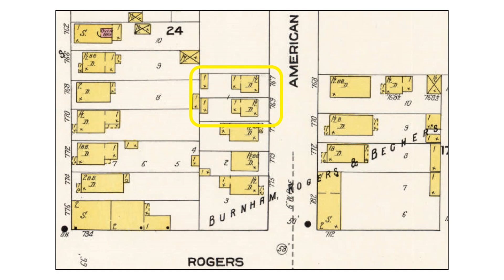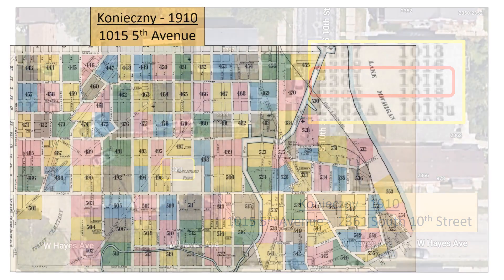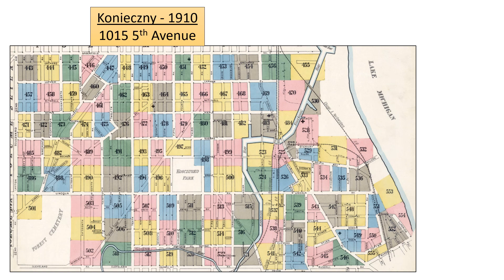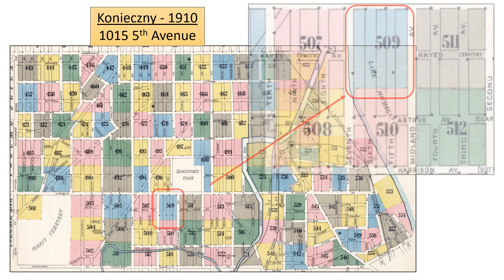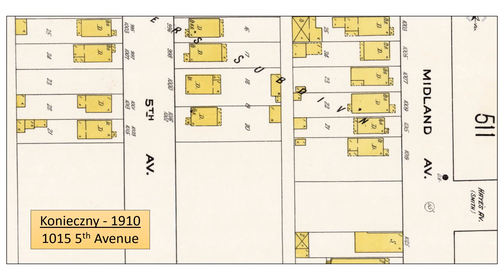On to our next task. Now we will be looking for the missing 1015 5th Avenue house. It turns out that this will pose an interesting challenge that demonstrates the value of using old maps when learning more about your ancestors. Still on volume 5 of the Sanborn map set from 1910, we will now be looking at section 509. Here is the map of section 509, which contains the house we are interested in. Zooming in shows the house at 1015 5th Avenue.